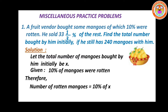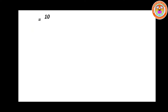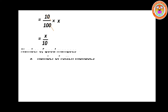You know how to convert the percentage as a fraction: 10 divided by 100. So you write 10 divided by 100 into x. So 10 and 10 will get cancelled, giving x divided by 10. Now you have found the number of rotten mangoes, that is x divided by 10. Now you have to find the number of good mangoes.